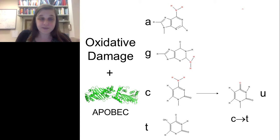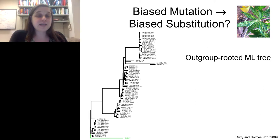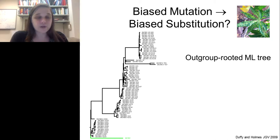If C-to-U deamination is a potential mutation bias in ssDNA, we asked whether we could detect this mutational bias in the long-term evolution of these viruses — would we see a biased substitution pattern over evolutionary time? Using East African cassava mosaic virus as an example, we created outgroup-rooted maximum likelihood trees using all available genomes from GenBank, with South African cassava mosaic virus as the sister group to help root the phylogeny.